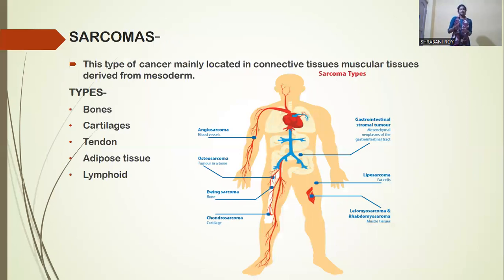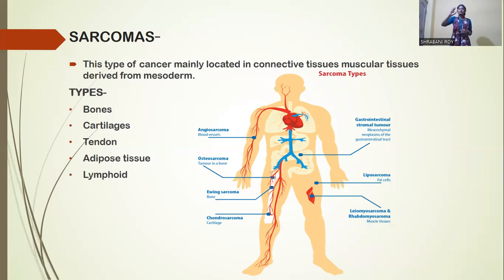In the case of sarcoma cancer, this type of cancer is located mainly in our connective tissue and muscular tissues. Our body part is divided into three layers: ectoderm, the middle portion is mesoderm, and the last portion is endoderm.